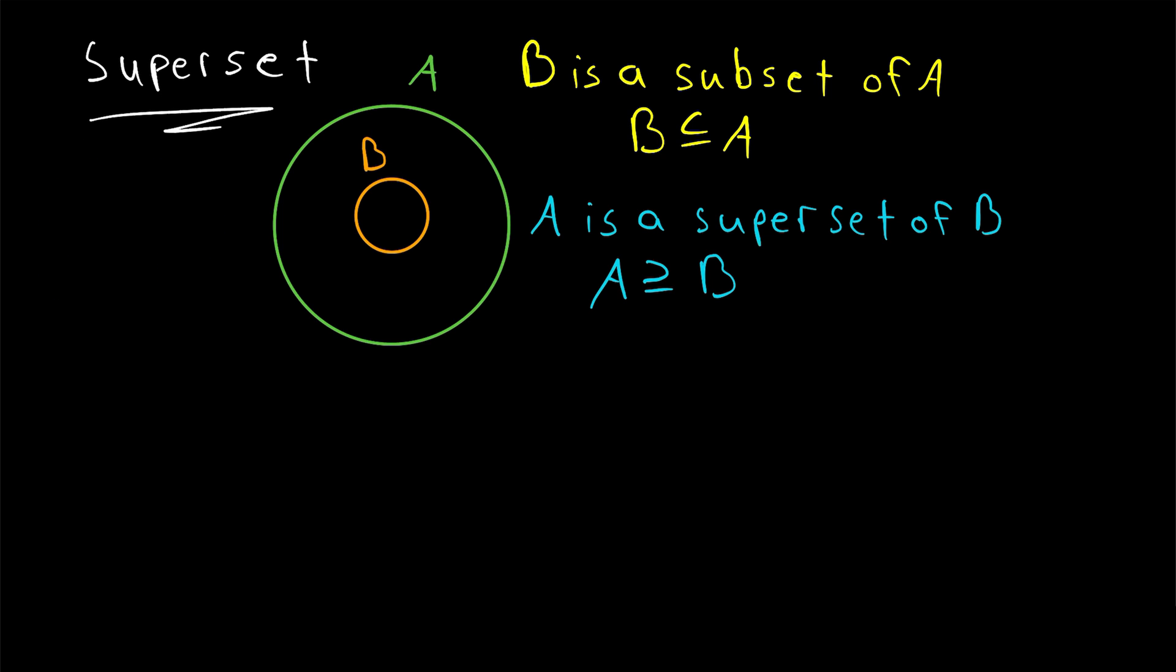It's the same deal with subsets and supersets. B is a subset of A means that every element of B is also an element of A. A is a superset of B means that A contains every element of B. These mean the exact same thing.